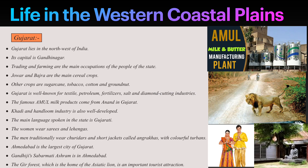Gujarat lies in the northwest of India. Its capital is Gandhinagar. Trading and farming are the main occupations of the people of the state. Main agricultural products are jowar, bajra, sugarcane, cotton, groundnut, and tobacco.